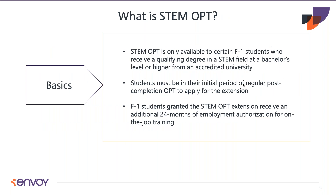The third employment authorization category is STEM OPT. This is an option for F-1 students who received their bachelor's, master's, or doctoral degree in Science, Technology, Engineering, or Mathematics from an accredited SEVP-certified school. In that case, students can apply for a two-year extension to further extend their employment authorization after their post-completion OPT and continue to work. ICE has a published list of eligible degree programs to determine which degree fields qualify for the STEM extension.